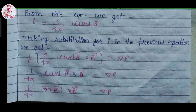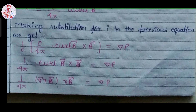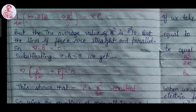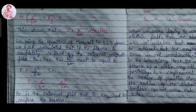By solving using the vector identity, 1 over 4 pi times (del cross B) cross B equals del P, which can be written as: 1 over 4 pi times [(del dot B) times B minus del(B squared over 2)] equals del dot P. Since the lines of force are straight or parallel, del dot B equals 0 from Maxwell's equation. Substituting this, we get del(B squared over 8 pi) plus del P equals 0, which shows that P plus B squared over 8 pi equals constant.